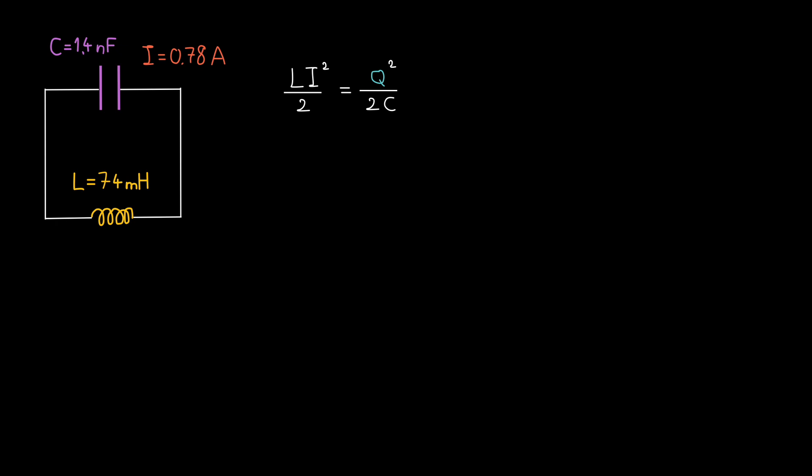The maximum energy stored in the inductor is equal to the maximum energy stored in the capacitor. Therefore, L times capital I squared divided by 2 is equal to capital Q squared divided by 2 times C.